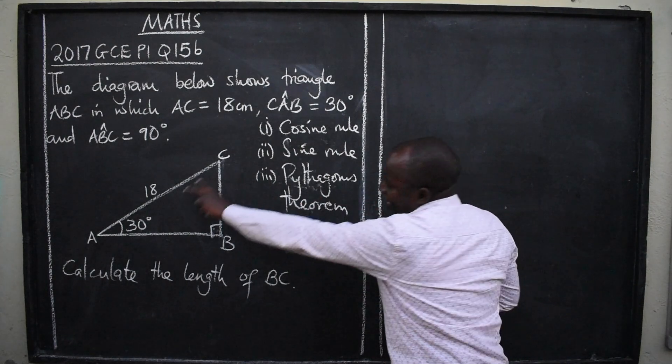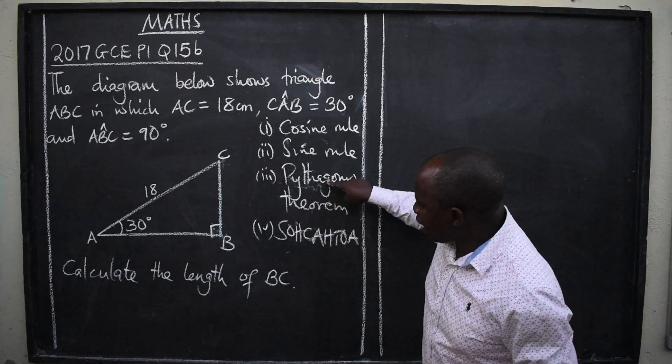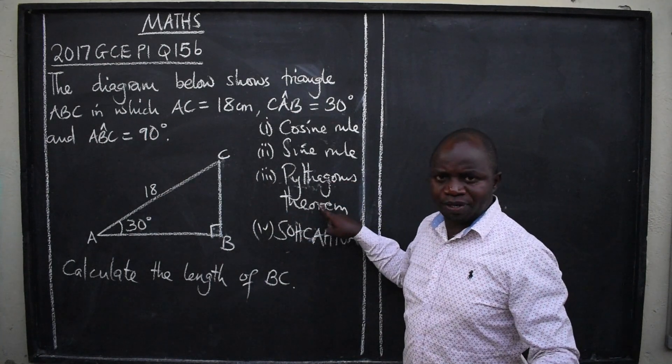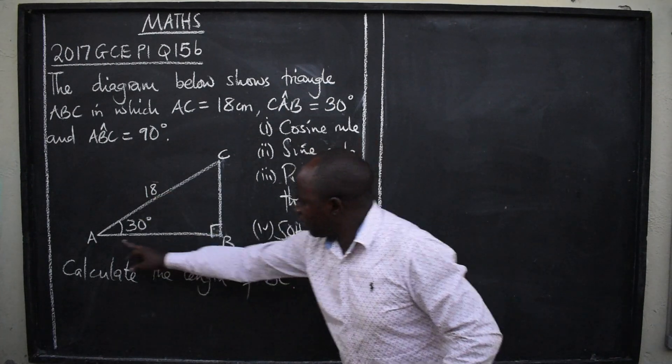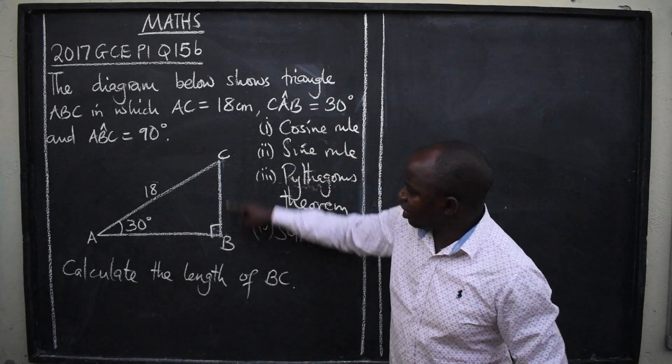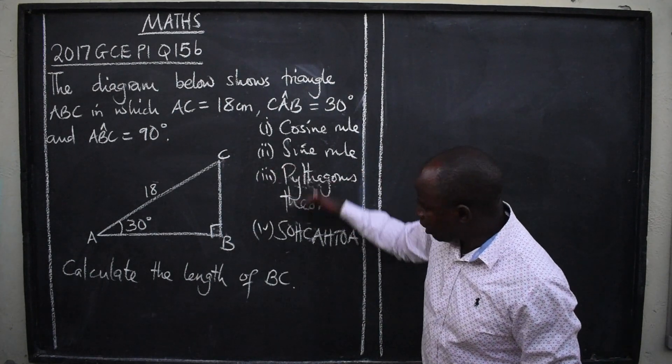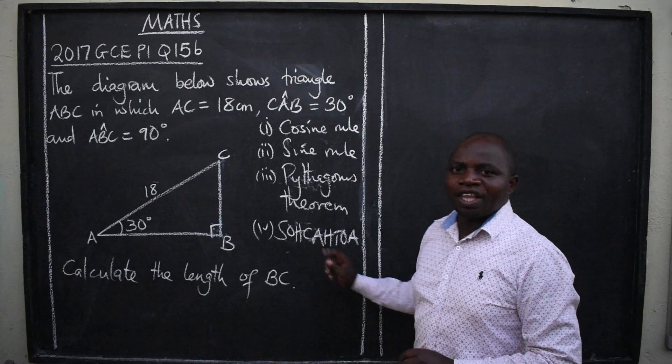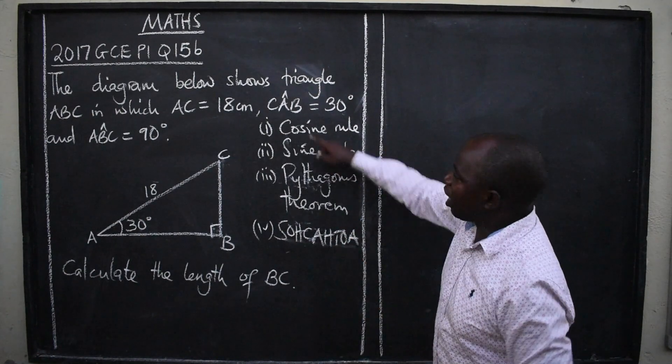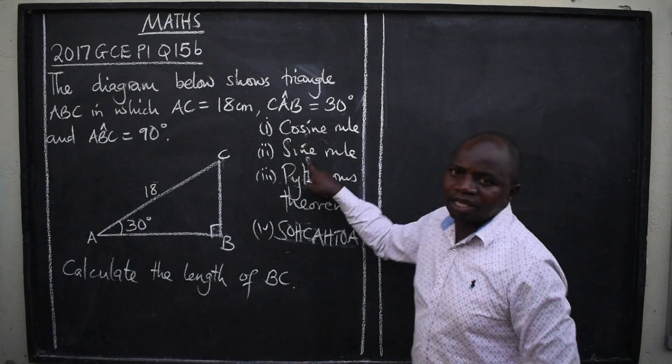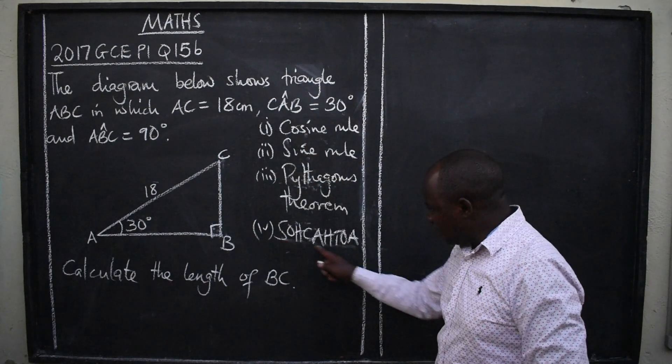So, looking at this triangle that we have, you can see that the Pythagoras theorem here cannot be used. Why? Only one side has been given. If we were given two sides, then they are asking us to find the third, we can use Pythagoras, no problem. So, it is now official that the only one that can be used is SOHCAHTOA. You cannot use the sine rule here. You can't use the cosine rule or the sine rule here. So, now it is SOHCAHTOA.